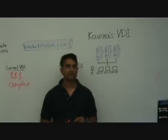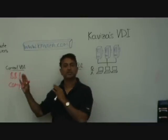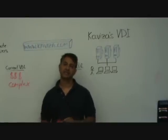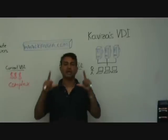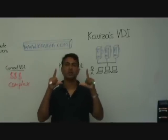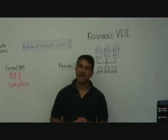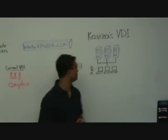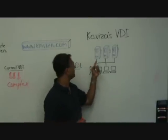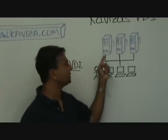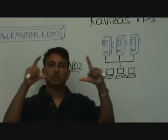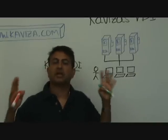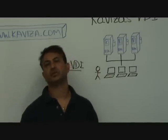Number two, we took all that functionality — connection brokering, provisioning, generating pristine desktops on the fly — and put all that into a Kaviza virtual appliance. So now, if you want to create a Kaviza virtual desktop server, this is what you do: bring in a commodity server with direct attached storage and a hypervisor, load up Kaviza's virtual appliance, and voila — you've got everything you need to generate virtual desktops.